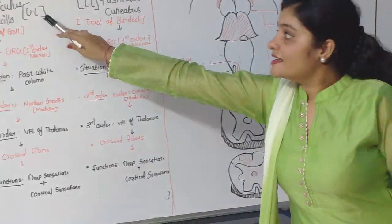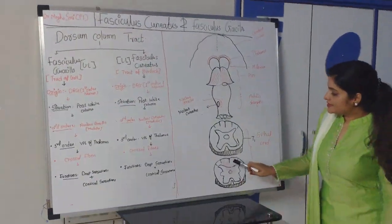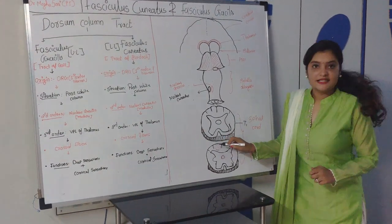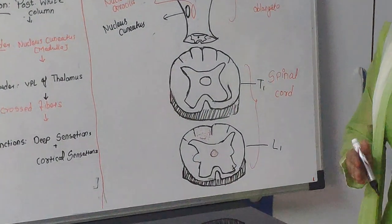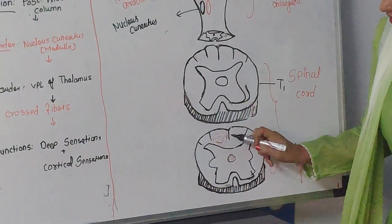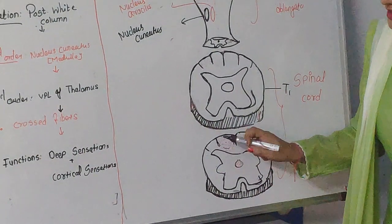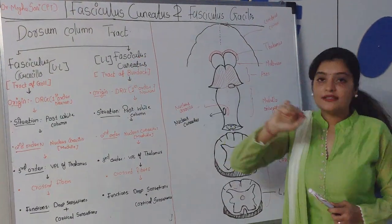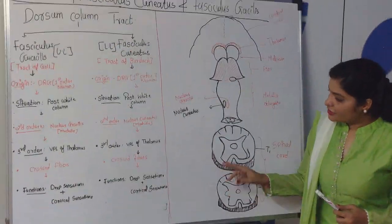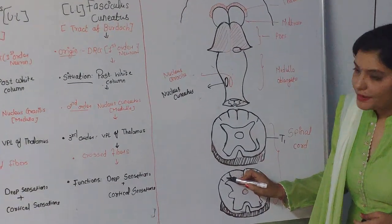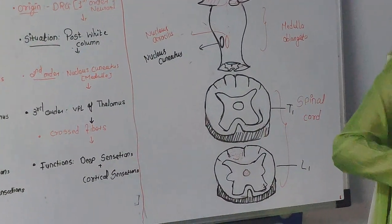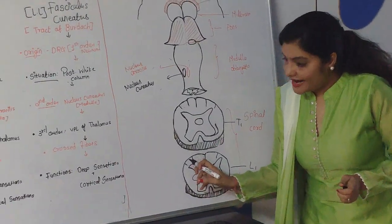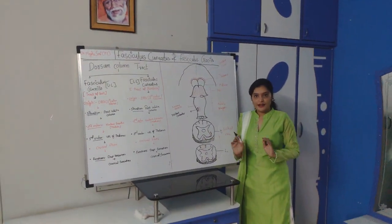The first tract, fasciculus gracilis, is situated on the medial part of the spinal cord — between the posterior medial sulcus and the posterior intermedial sulcus. The second tract, fasciculus cuneatus, is situated in the lateral part of the spinal cord, lateral to the fasciculus gracilis, on the lateral portion of the posterior white column.